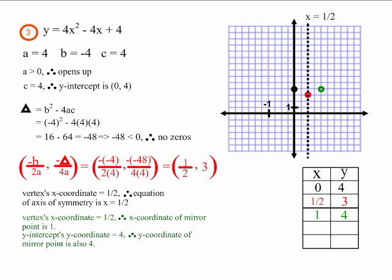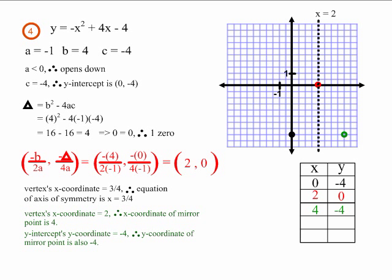In example 3, there is no need to use the quadratic formula, because example 3 has no zeros. In example 4, there is no need to use the quadratic formula, because example 4 has only one zero, and it is also the vertex, so we have already found it.